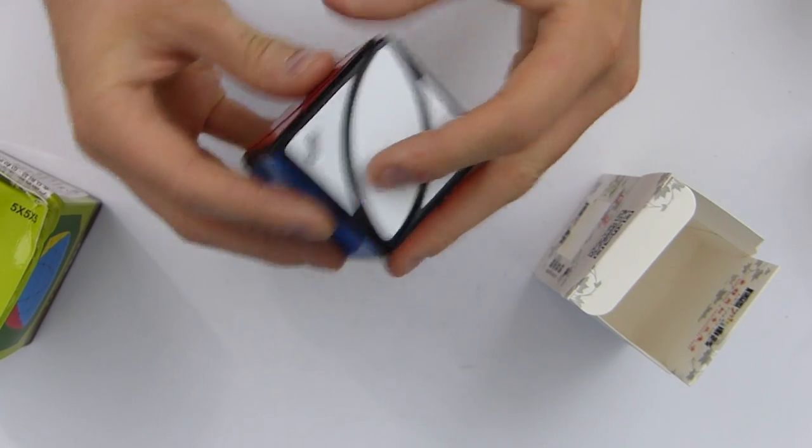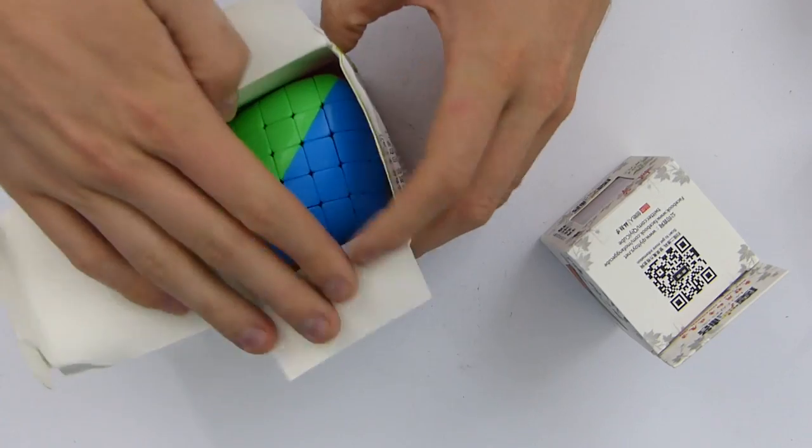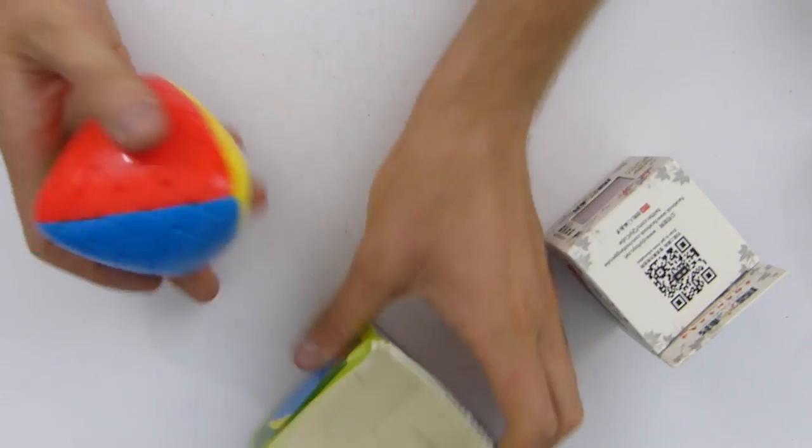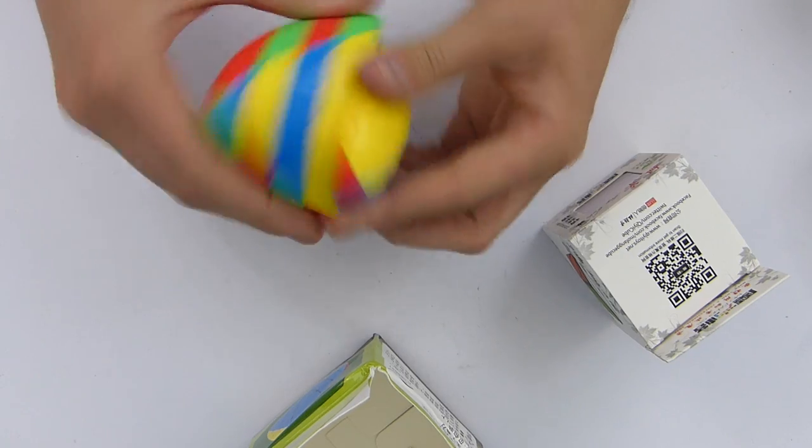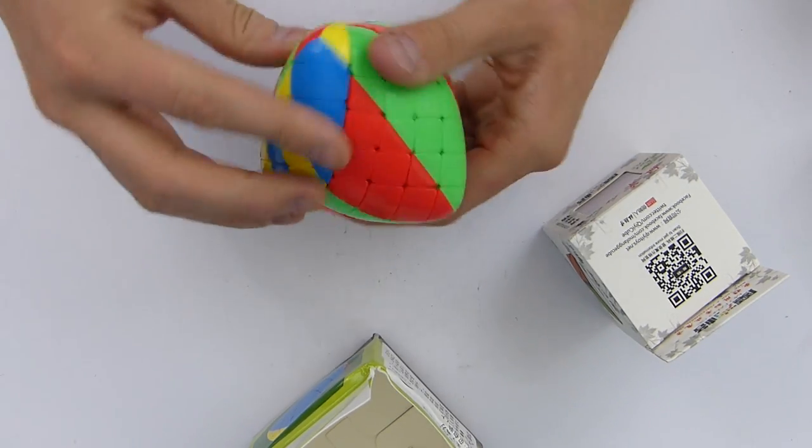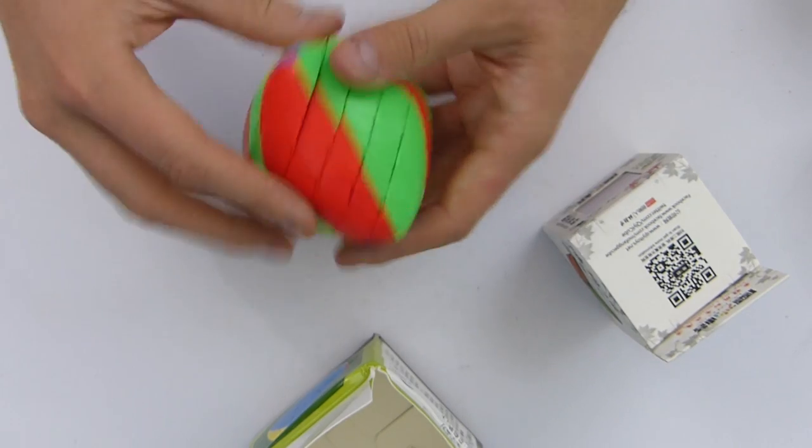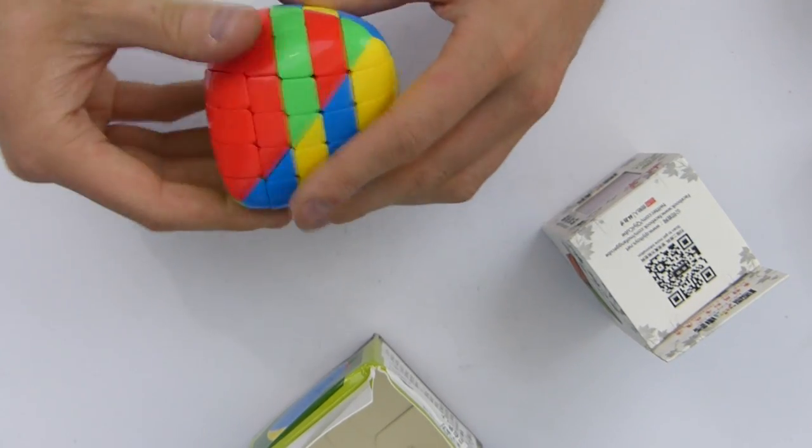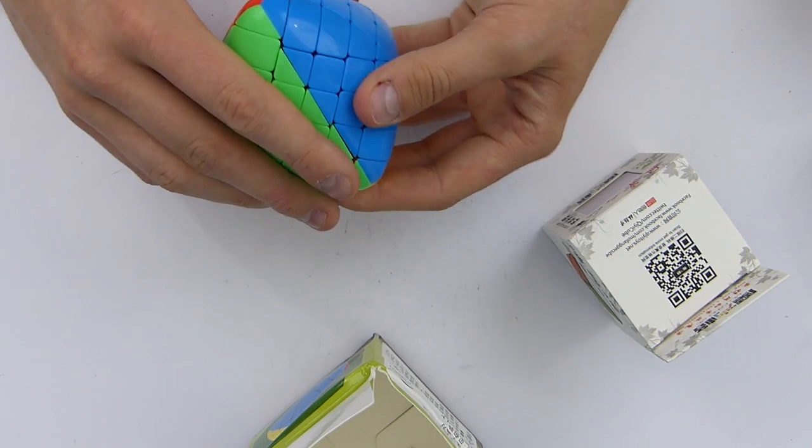The second one is going to be the 5x5 Master Morphix. This is actually the first 5x5 shape mod that was ever mass-produced, and I also reviewed it on my channel if you want to see what it looks like and how it spins. It's a really nice puzzle, corner cuts really well, and it's fun to play with. These are the two YouTube giveaway puzzles. If you want to win these, you just have to subscribe to my YouTube channel and leave a comment so I can pick a winner.